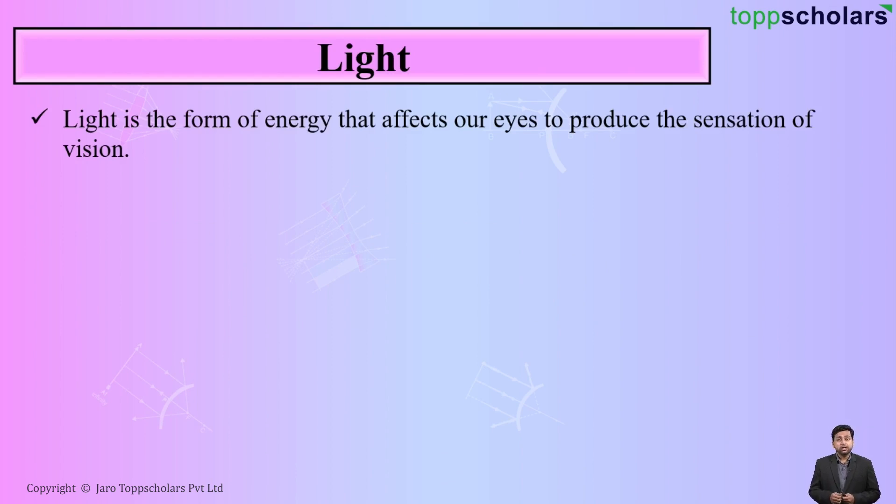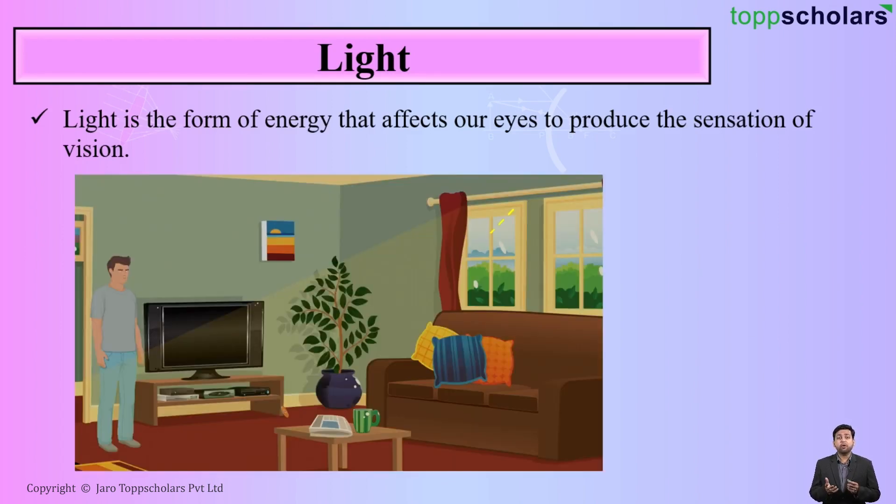Now, what is exactly light? Light is nothing but it is a form of energy that affects our eyes to produce the sensation of vision.